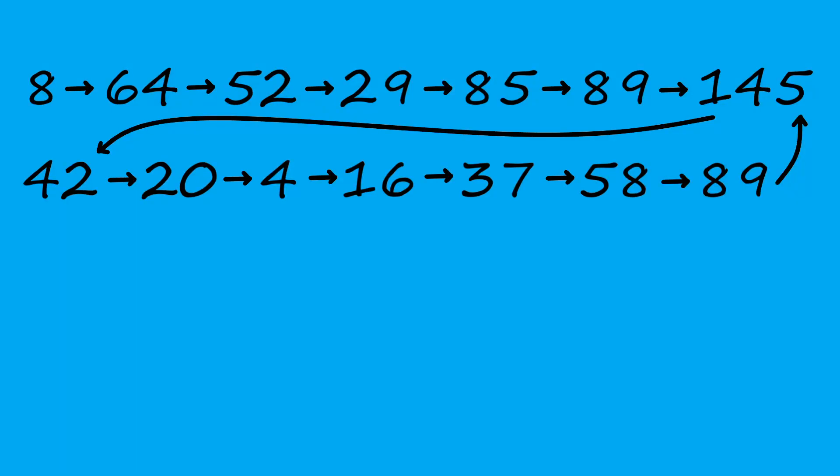Seriously, no matter how large the number, the sequence of the sum of the squares of the digits either eventually terminates to one or ends up cycling forever in this sequence of eight numbers. The concept of a happy number is base-specific, though, because it has to do with the digits that represent a number.